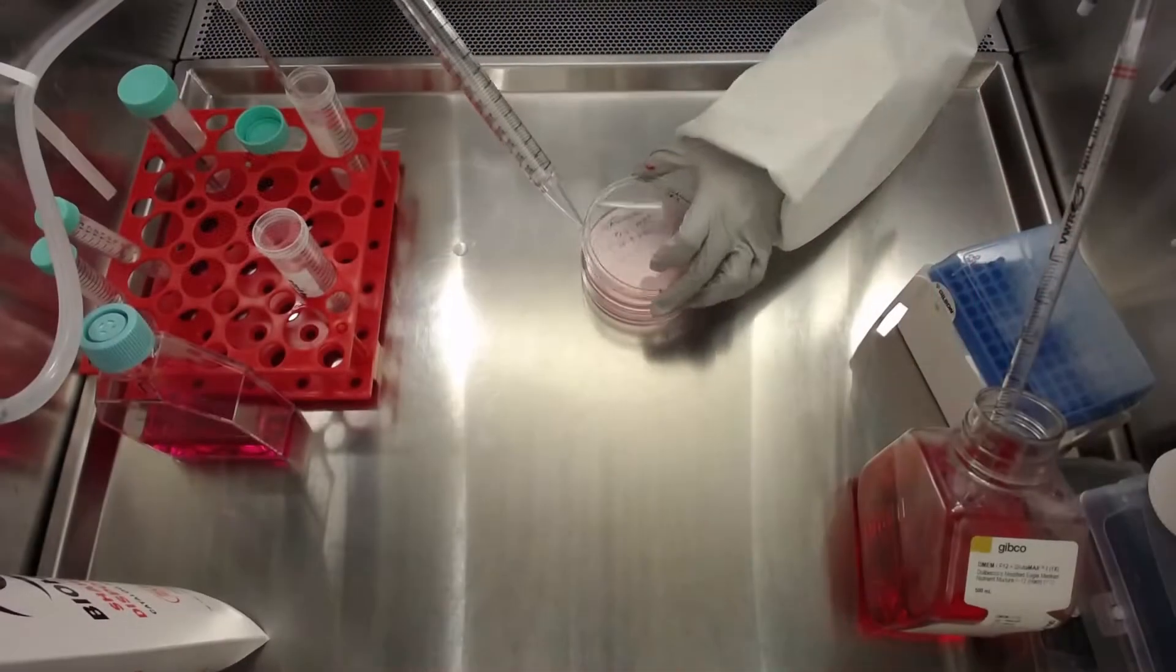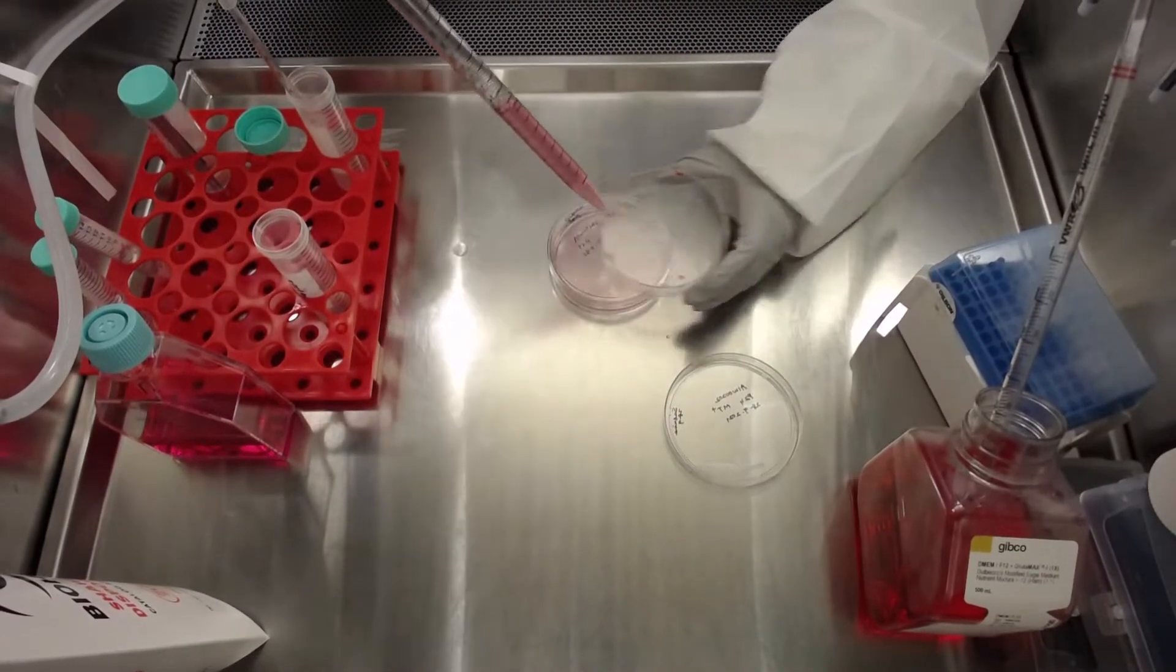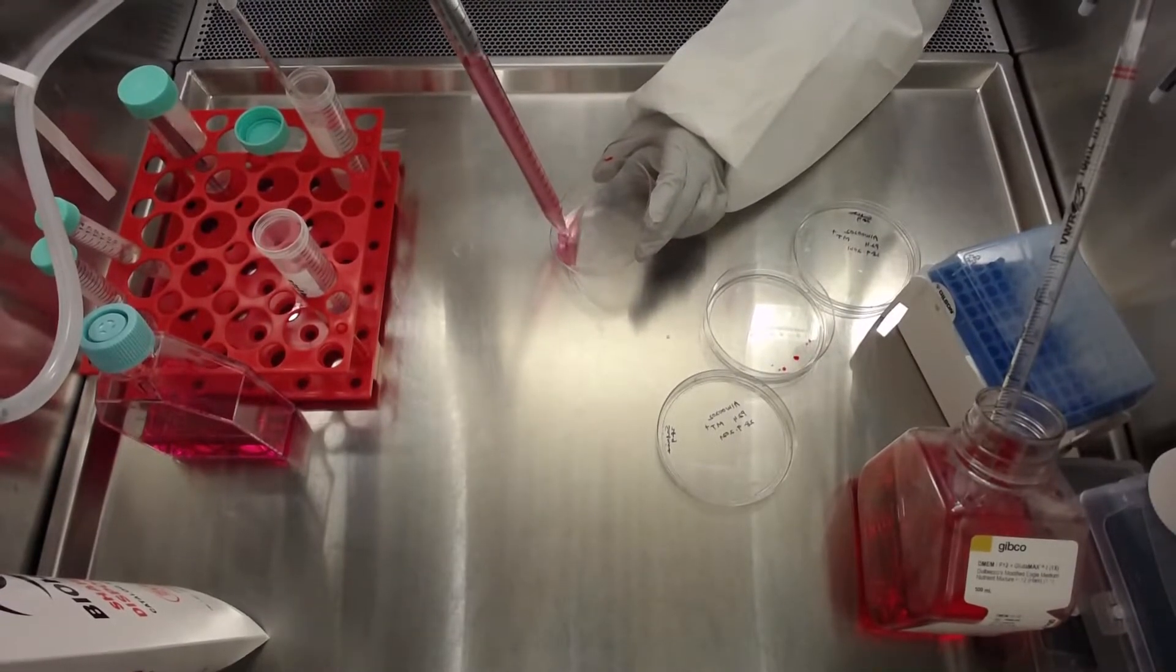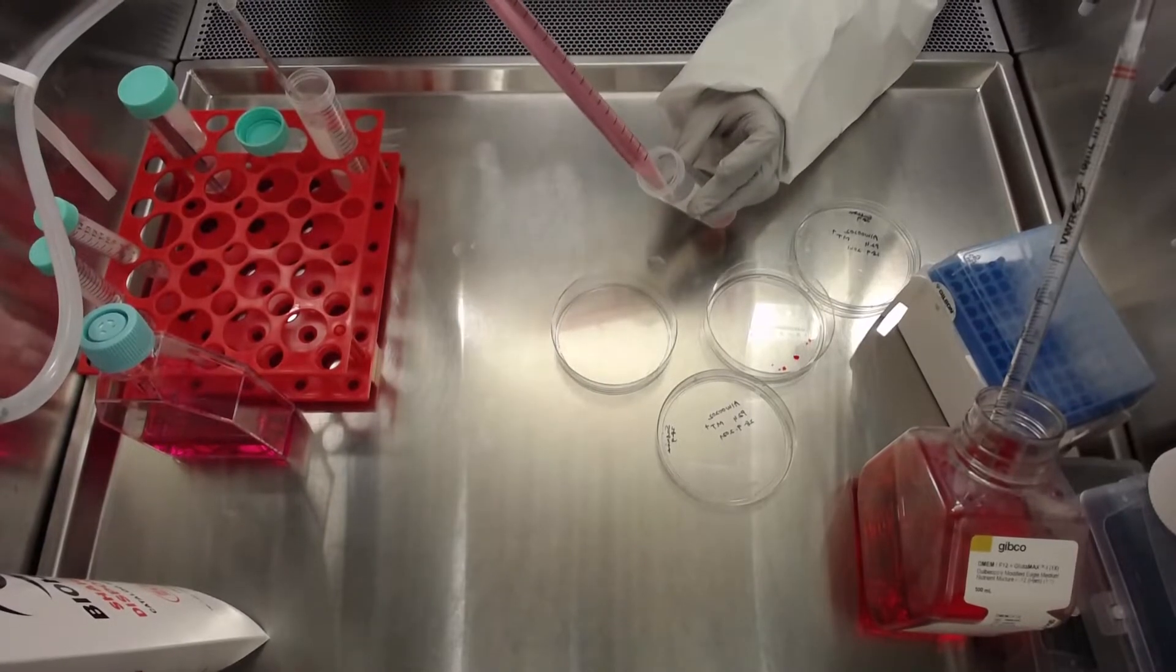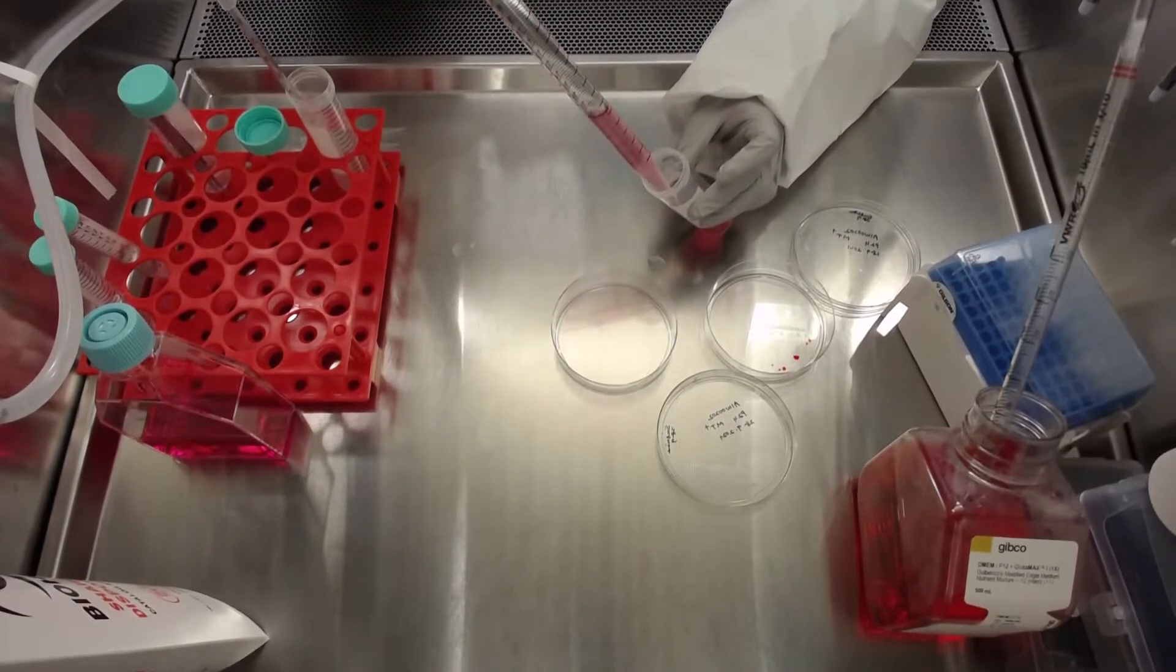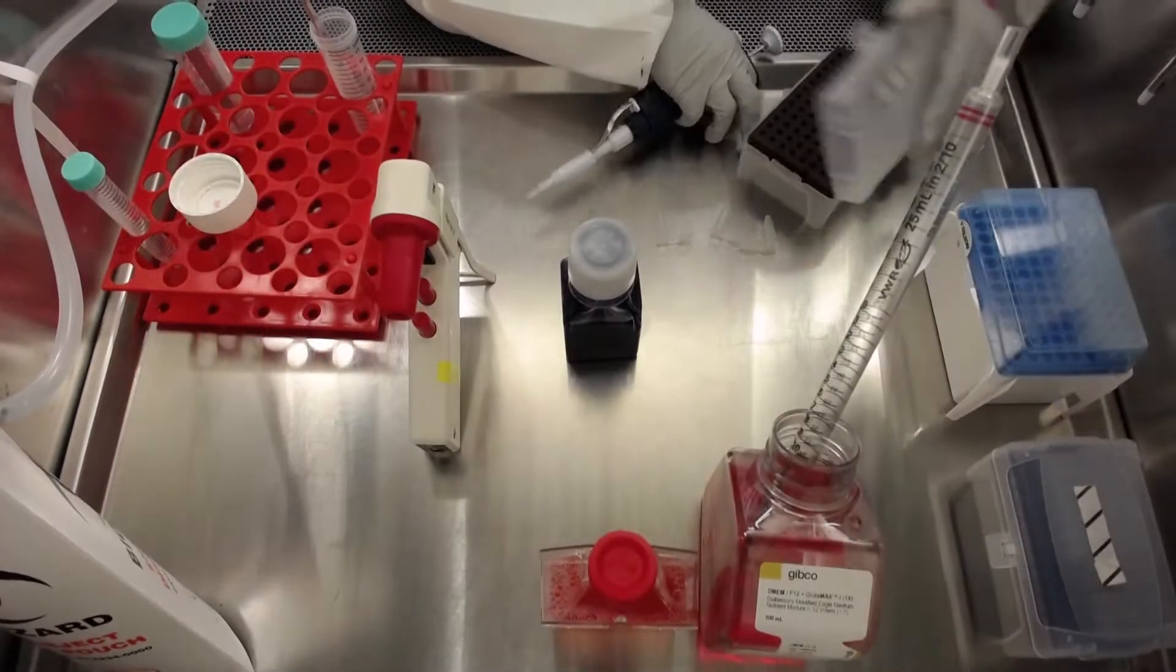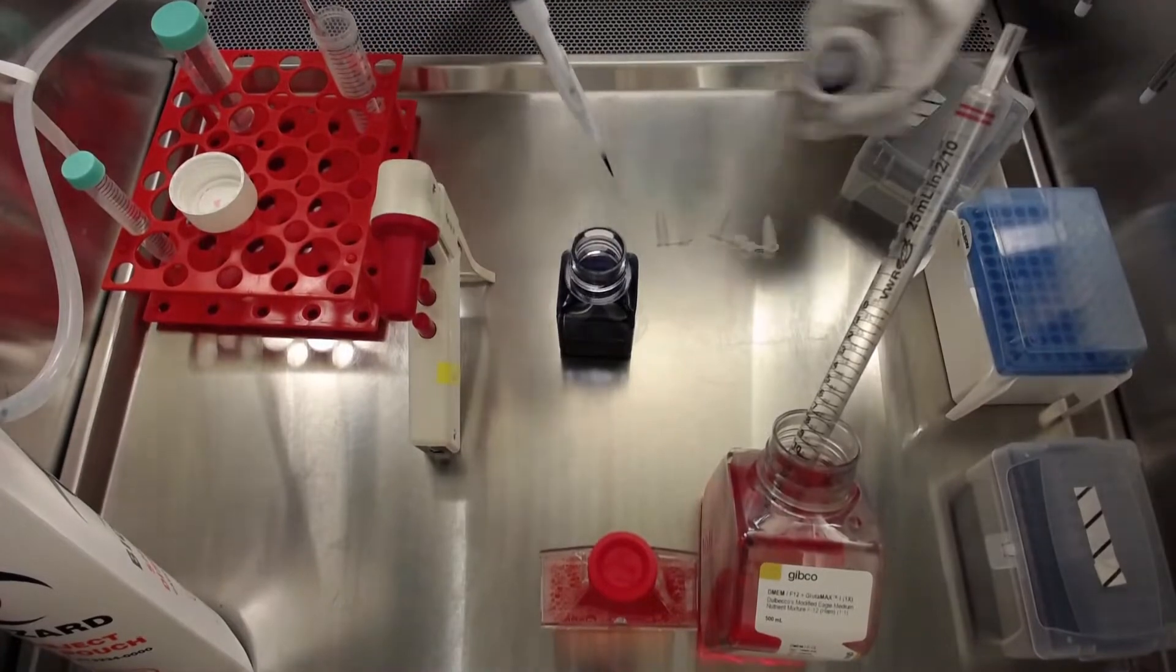Transfer all the volume of the cell suspension from both dishes into a 50 milliliter tube. In order to collect as many cells as possible, wash the dish with an extra 5 milliliters of DMEM F12, and then transfer all the volume to the same 50 milliliter tube. It is important, however, to minimize pipetting of the cells at this step to preserve their viability.